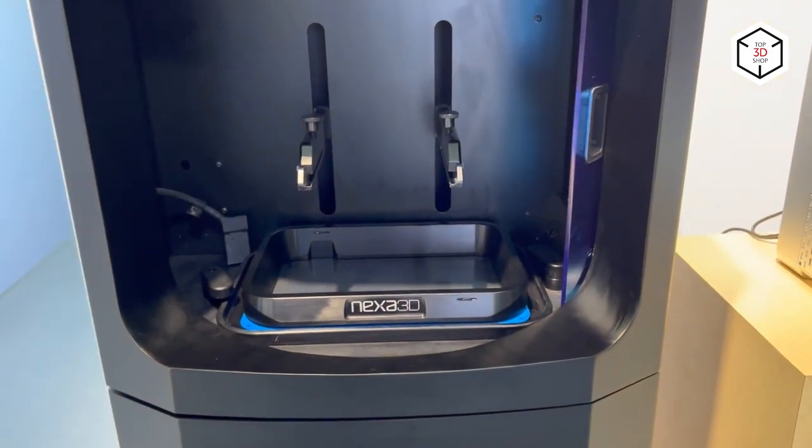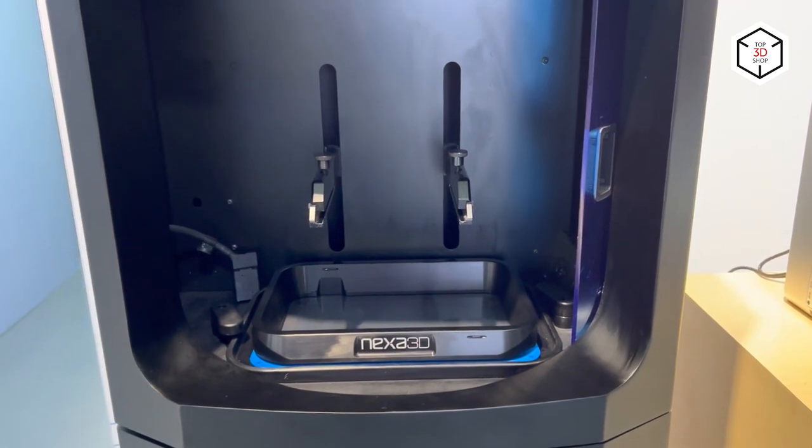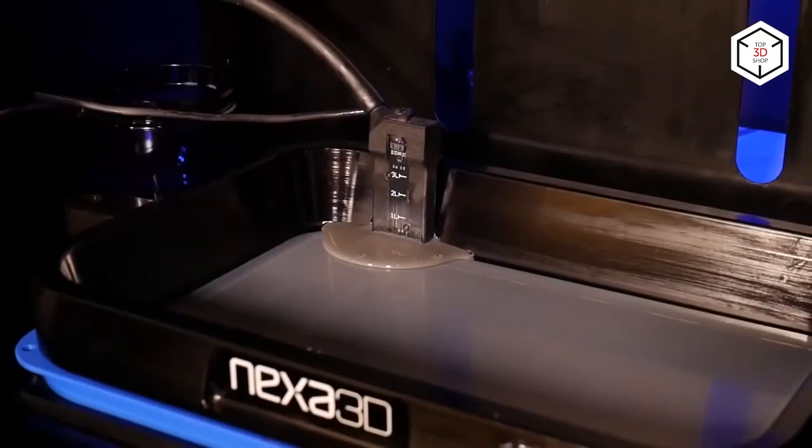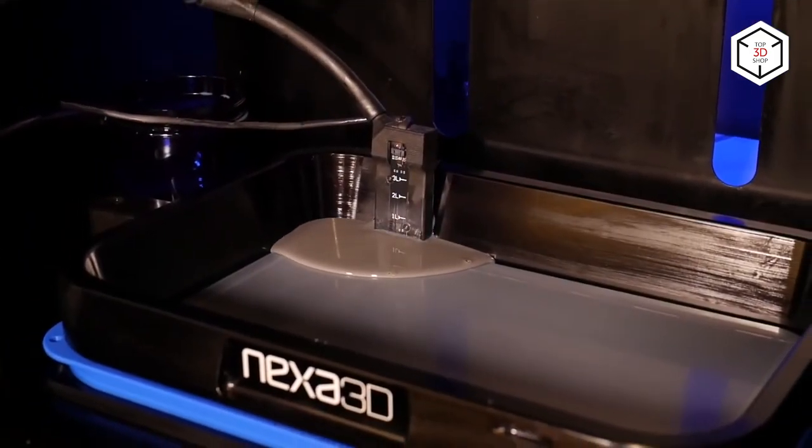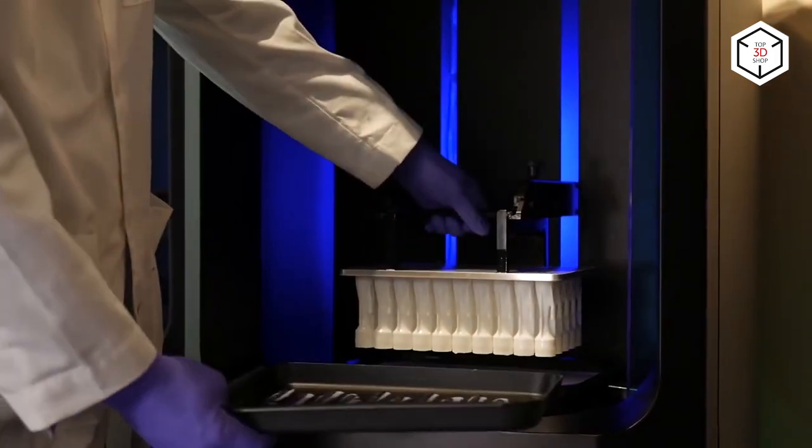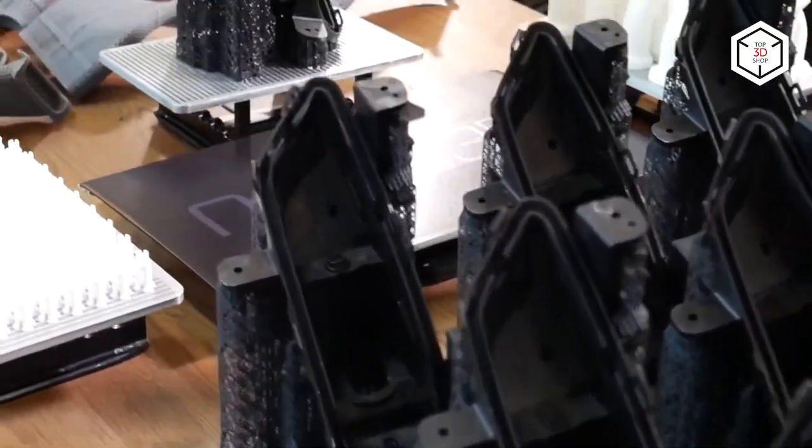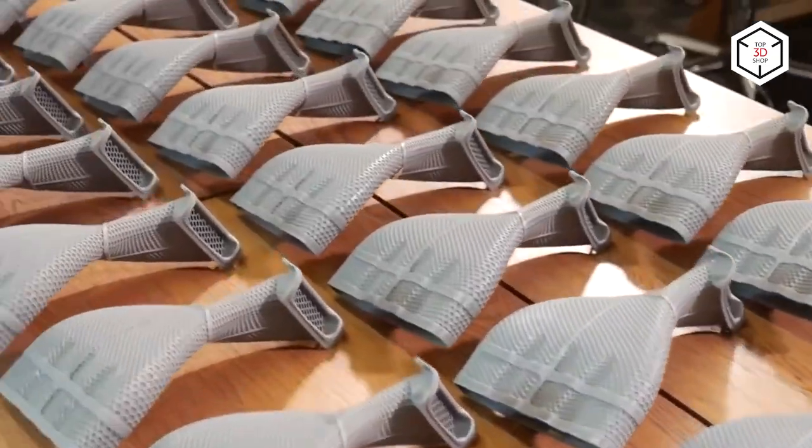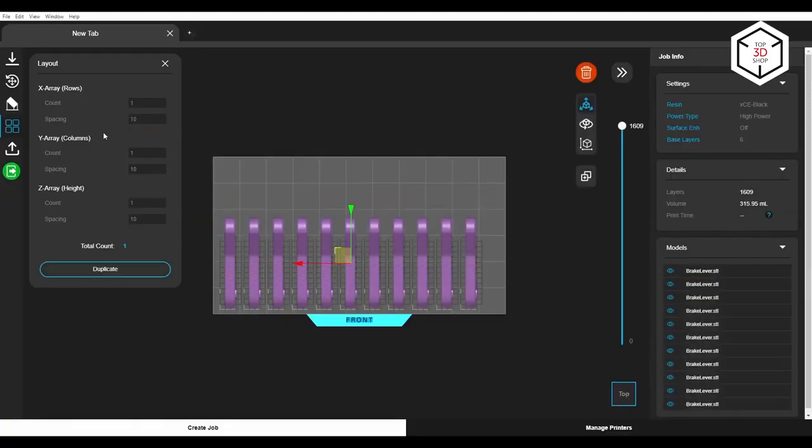With a build volume that huge, resin printers can be used not only for architectural design, printing out electronic accessories or dental molds, but also full-sized movie props, automotive and aerospace prototypes. In this video review, we'll cover all types of resin 3D printers from consumer level machines to industrial systems ready to serve a project of any complexity.